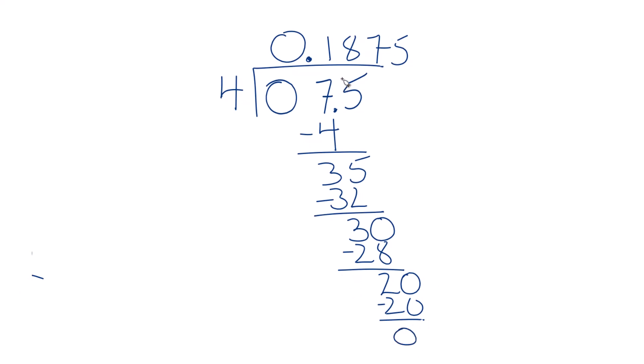So when we divide 0.75 by 4, we get the decimal 0.1875. And we can check this. If you multiply 4 times 0.1875, you will get 0.75. So we know we did this correctly.